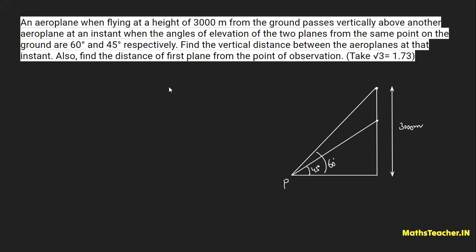Now let's read what we need to find: find the vertical distance between the aeroplanes at that instant, and also find the distance of the first plane from the point of observation. So we have to find two distances. Let's name the points: first aeroplane is A, second aeroplane is B, and C is the foot on the ground directly below them. We need to find the vertical distance AB and the distance PA — the hypotenuse of right angle triangle ACP.